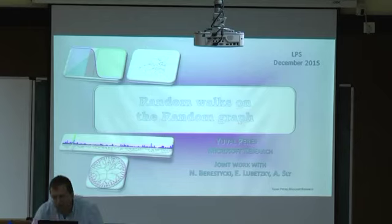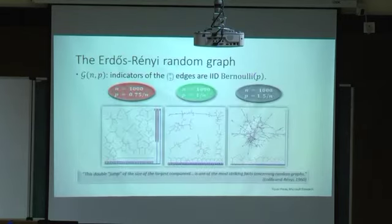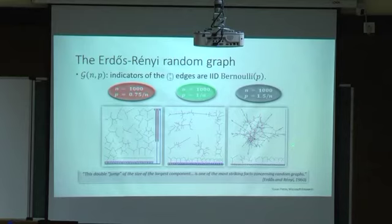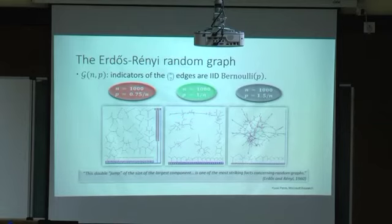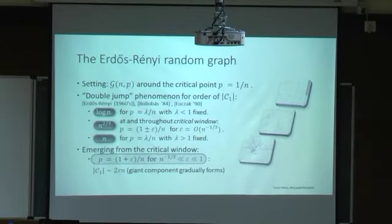This is joint work with Eyal Lubecki, Nathaniel Berestycki, and Allan Sly. Here we consider random graphs instead of deterministic Ramanujan graphs. Recall the basic structure of the Erdős-Rényi random graph G(n,p): there's a subcritical regime where the largest component is logarithmic, a critical regime where it's n to the two-thirds, and the supercritical regime — which we focus on — where the largest component is linear size. We're interested in random walk on this largest component.